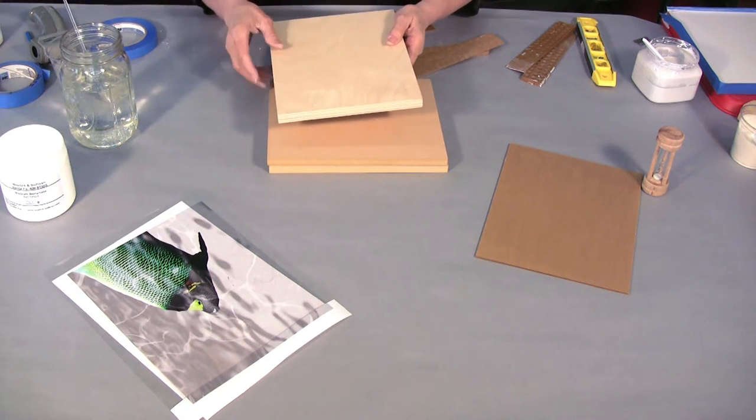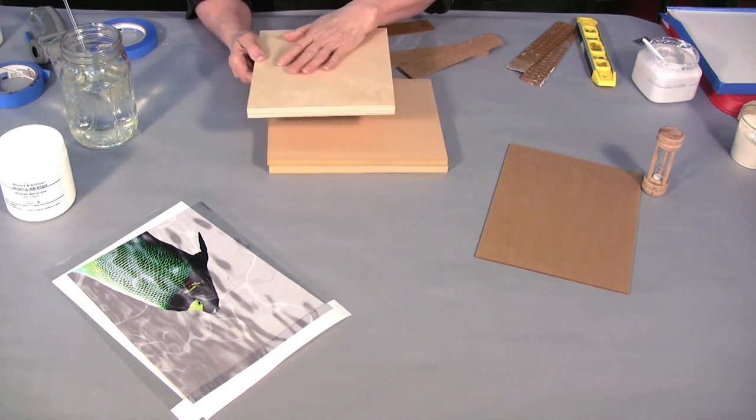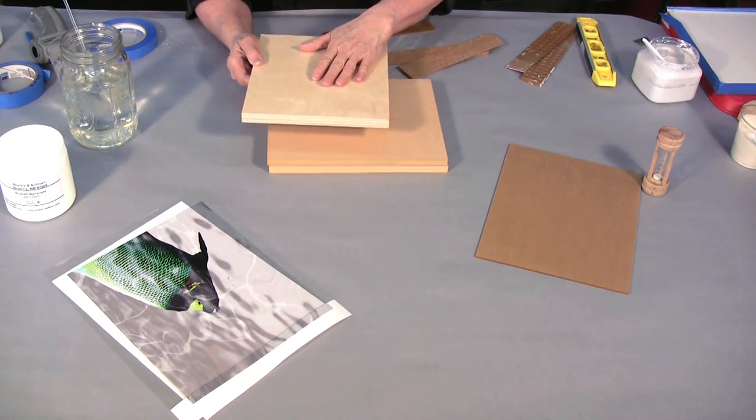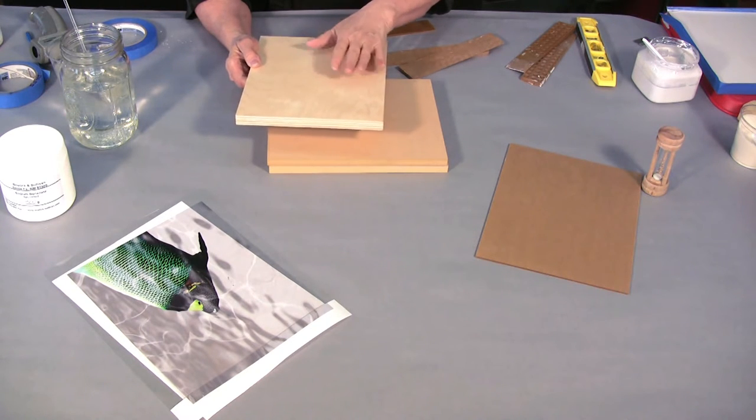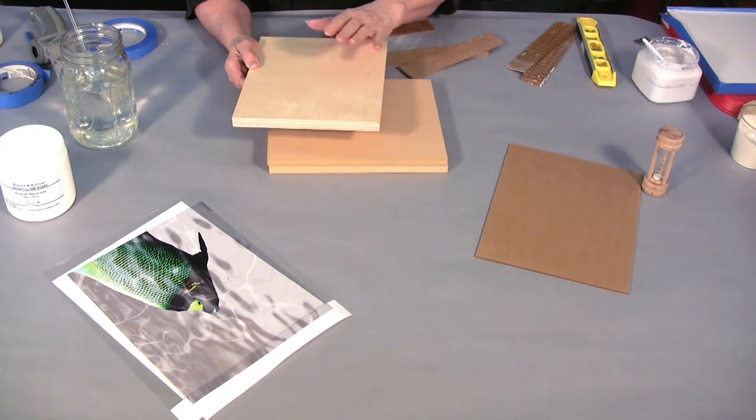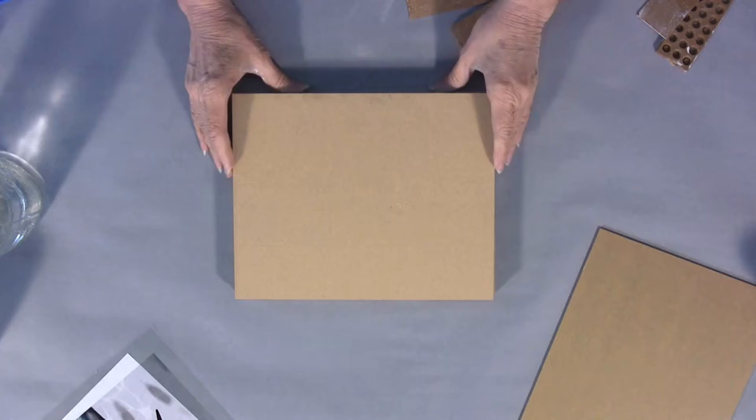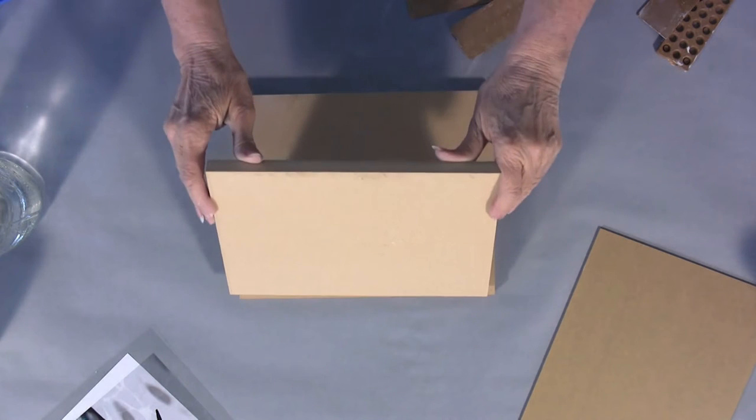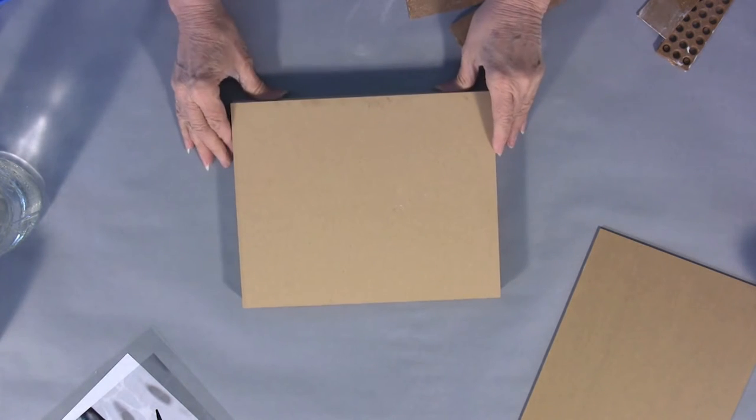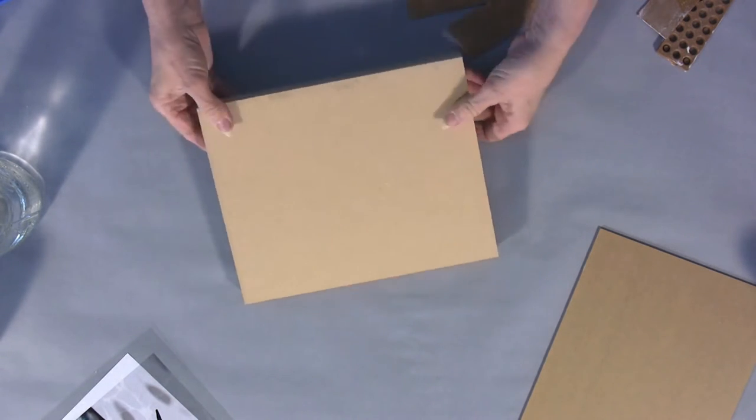If you're going to use plywood you're going to need to wet it, raise the grain, let that dry, sand it down smooth, wet it again, raise the grain, and let that dry and then it will be ready to use. My preference is of course to use the Med-X panels because they won't warp and the fresco itself sticks really well to that surface.